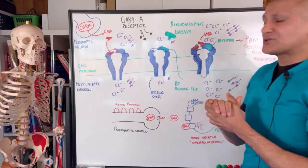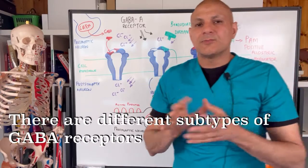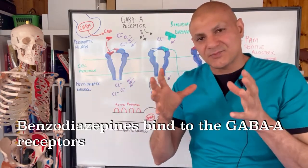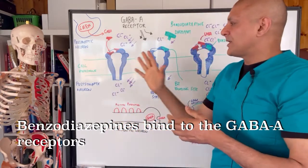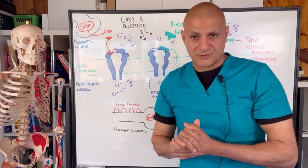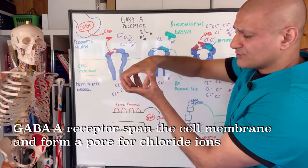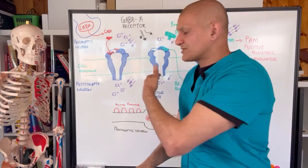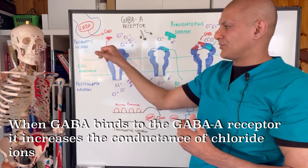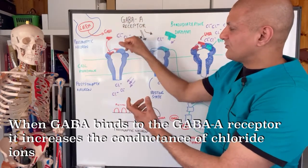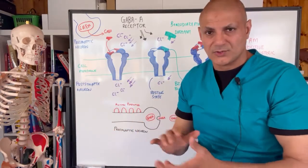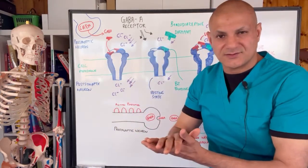So let's look at the actual receptor itself. GABA can bind to a number of different receptors with different subtypes, but the subtype we're interested in is called the GABA-A subtype, because this is the subtype that the benzodiazepines actually bind to. The GABA-A receptor is composed of five subunits that lie half in, half out of the cell, and they form a pore through which chloride ions can pass. When GABA binds on its binding site, it increases the conduction of these negative chloride ions, hyperpolarising the cell and reducing its excitability.